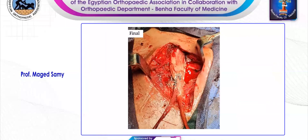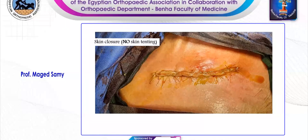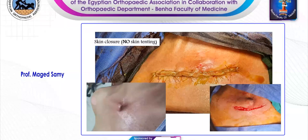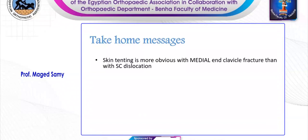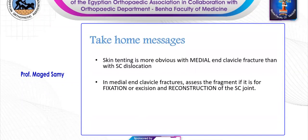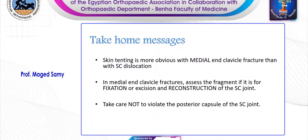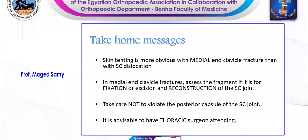This is how it finally looks — very secure fixation, and there is no skin tenting as we can see. This is the part of the skin that was about to slough. Nothing is pushing on the skin. For the immediate postoperative, we have to do an x-ray to make sure there is no pneumothorax. The take-home message: skin tenting is more obvious with medial clavicle fractures than with simple dislocations. In medial clavicle fractures, always assess the medial small fragment size. If it's too small for secure fixation, go for excision and reconstruction of the sternoclavicular joint. Take care not to violate the posterior capsule — the brachiocephalic trunk is quite near. It is strongly advised to have a thoracic surgeon attending. Thank you for your attention.